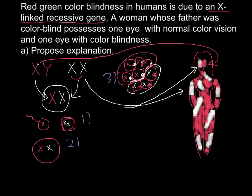The pattern can vary greatly. Imagine if her entire face developed from cell lines where the X chromosome from her mother's side was active — she would have completely normal vision. Conversely, if both eyes formed from cell lines with the father's defective X active, she might have red-green colorblindness in both eyes, even though she carries a normal X from her mother.